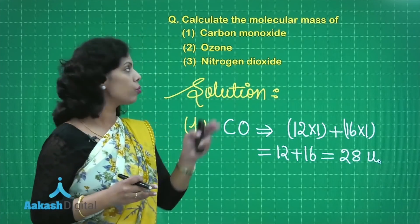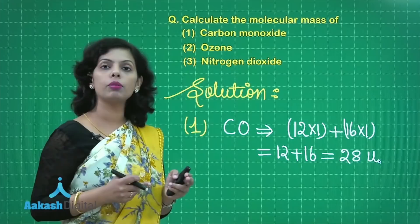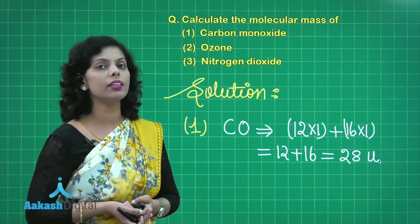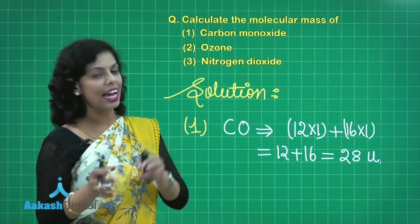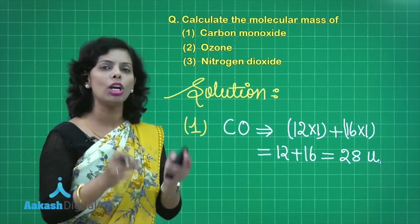This is for carbon monoxide, the molecular mass. And if it is asked what is the gram molecular mass of carbon monoxide, then what would be your answer? Definitely your answer would be 28 gram. The molecular mass in grams is termed as gram molecular mass.